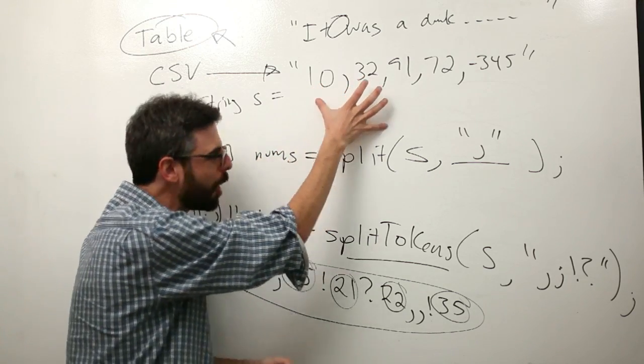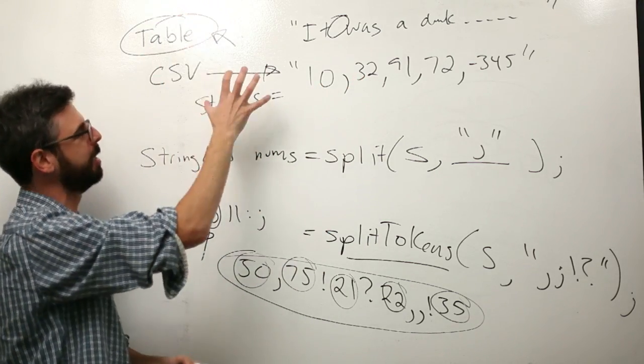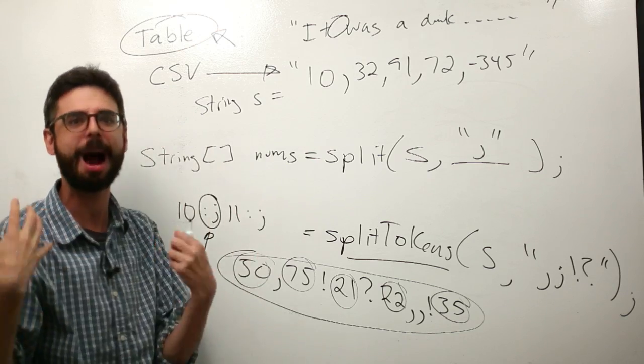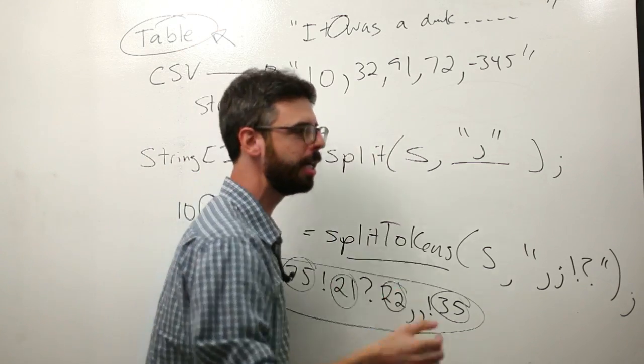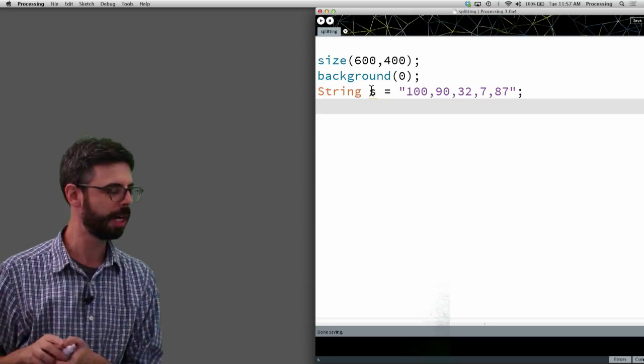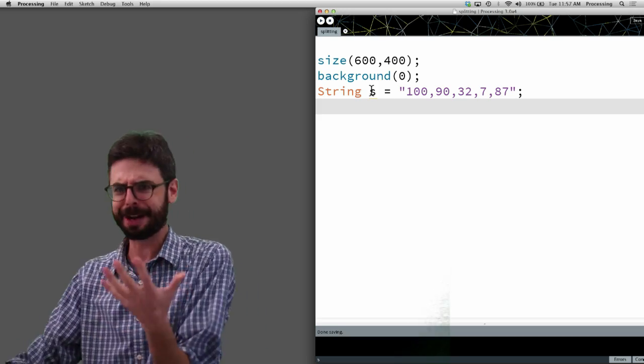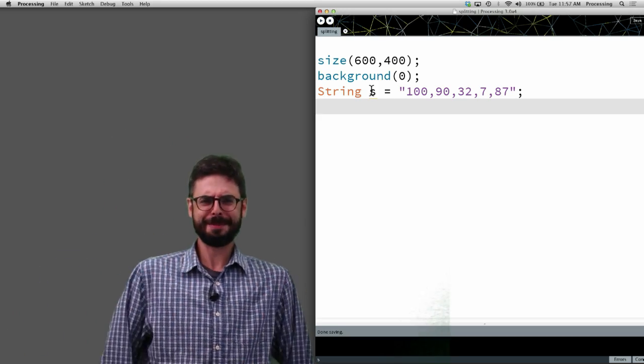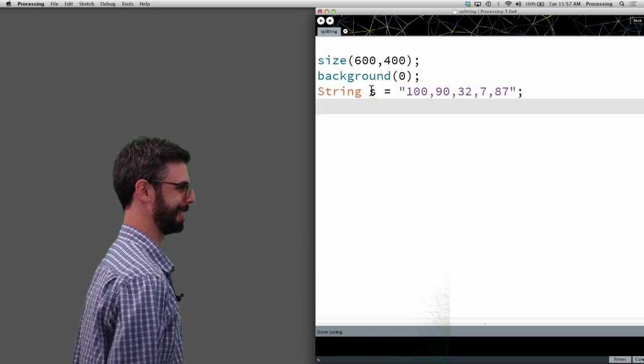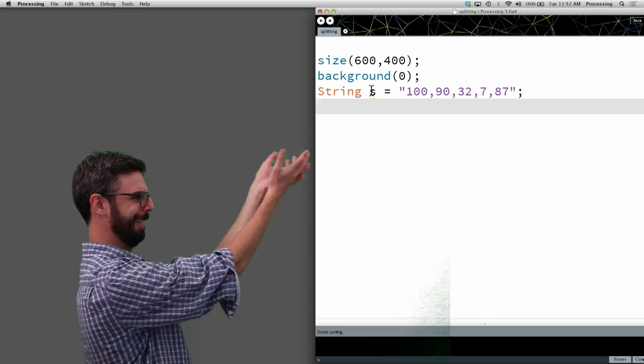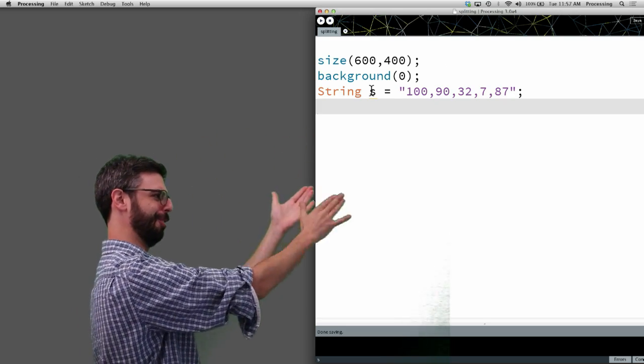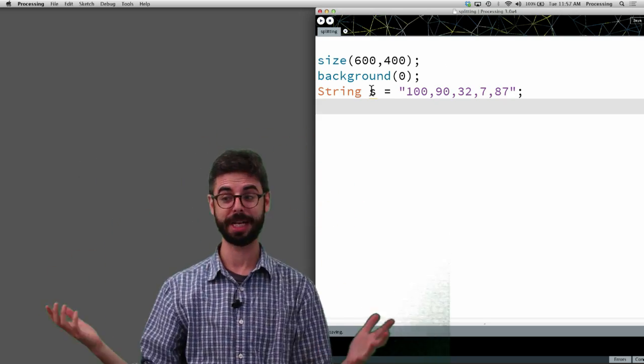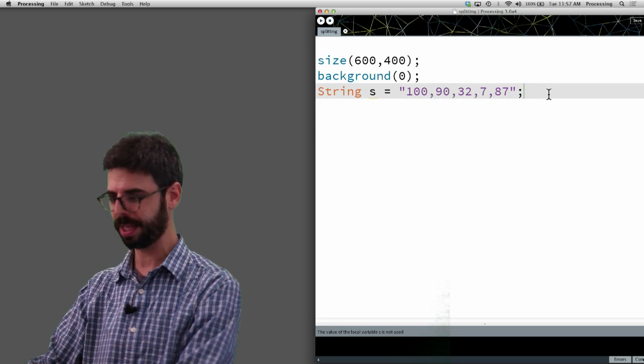So even though we're going to see that the table object is a very convenient and powerful way to work with tabular data, let's just make a quick little simple example together, kind of like first very preliminary data visualization. This is my data, it's these numbers 10, 90, 32, 7, 87, and I want to visualize that data. So let's look at splitting it first.